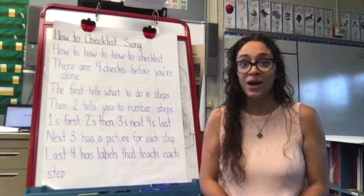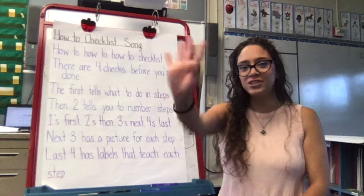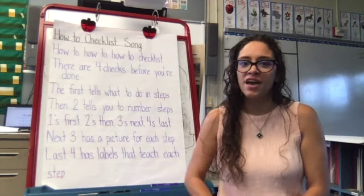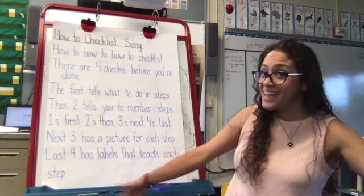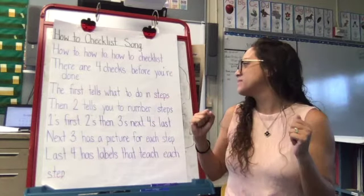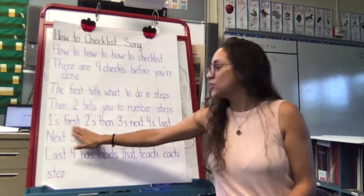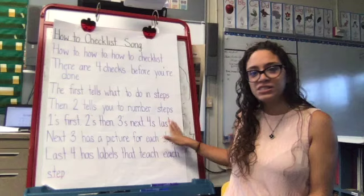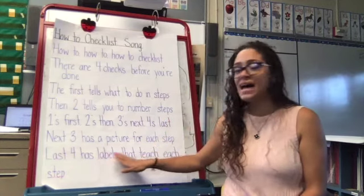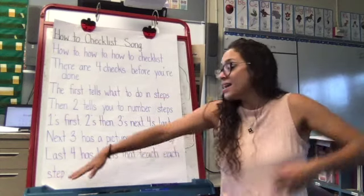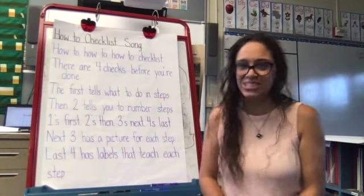How-to, how-to, how-to checklist. There are four checks before you're done. The first tells what to do in steps. Then two tells you to number steps. One's first, two's then, three's next, four's last. Next three has a picture for each step. Last four has labels that teach each step. How-to, how-to, how-to checklist.